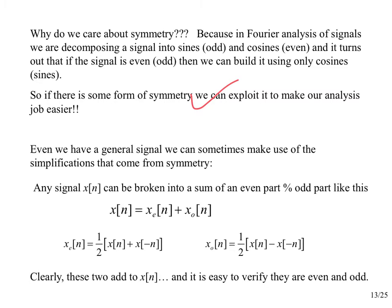Any function X can be written as the sum of one even function and one odd function. We can always form the even part by adding X(N) to its time-flipped version X(-N) and multiplying by one-half, and form the odd part by subtracting the time-flipped version from X(N) and multiplying by one-half. You can verify that these two parts add back to X(N), and that they are respectively even and odd.